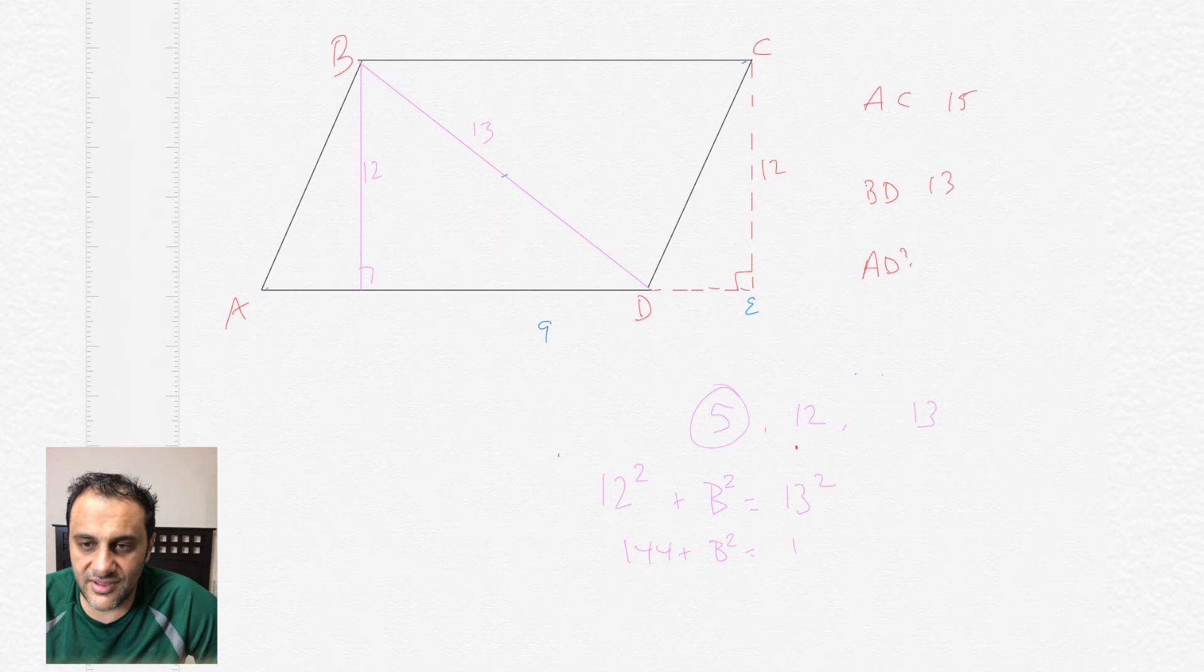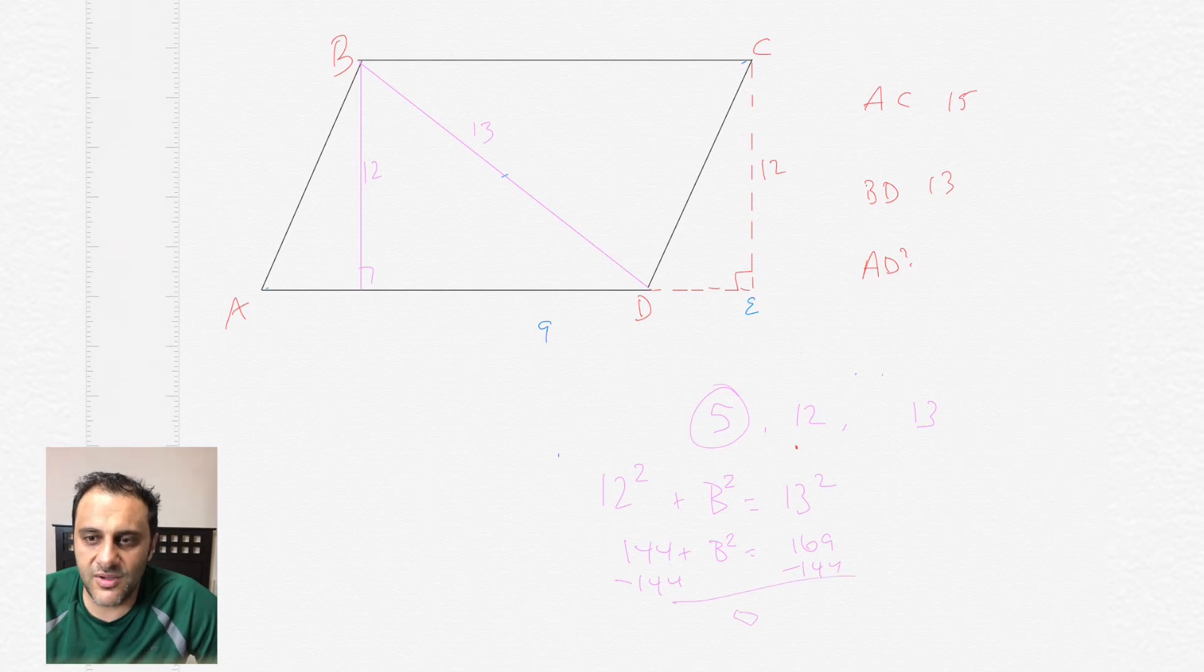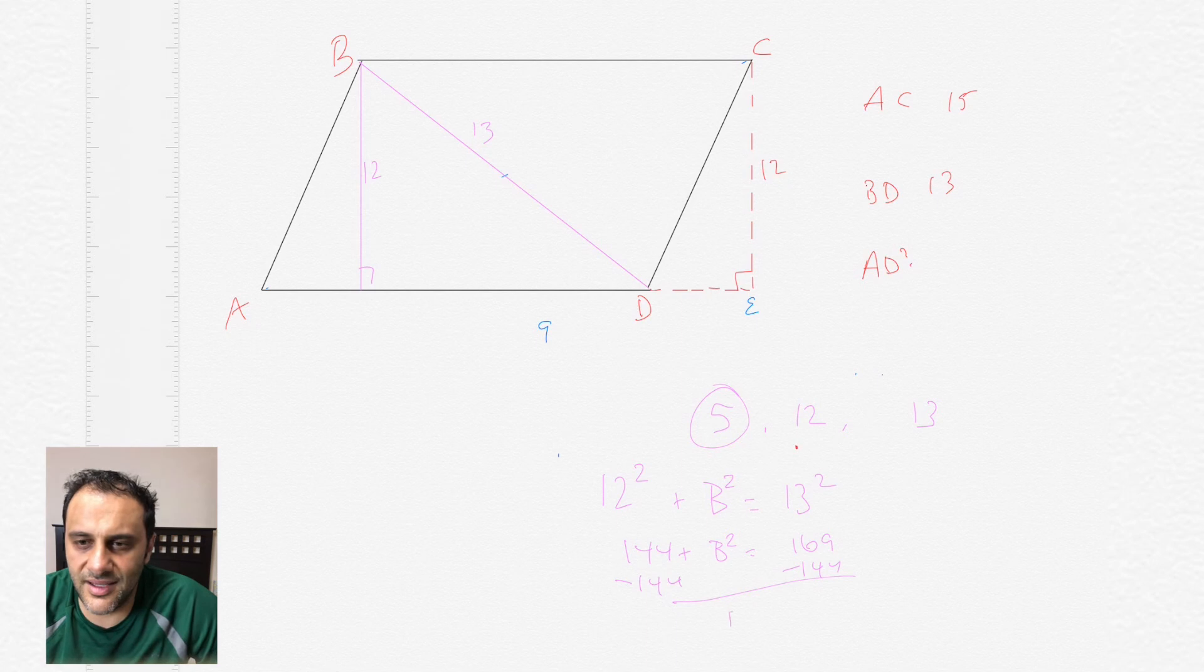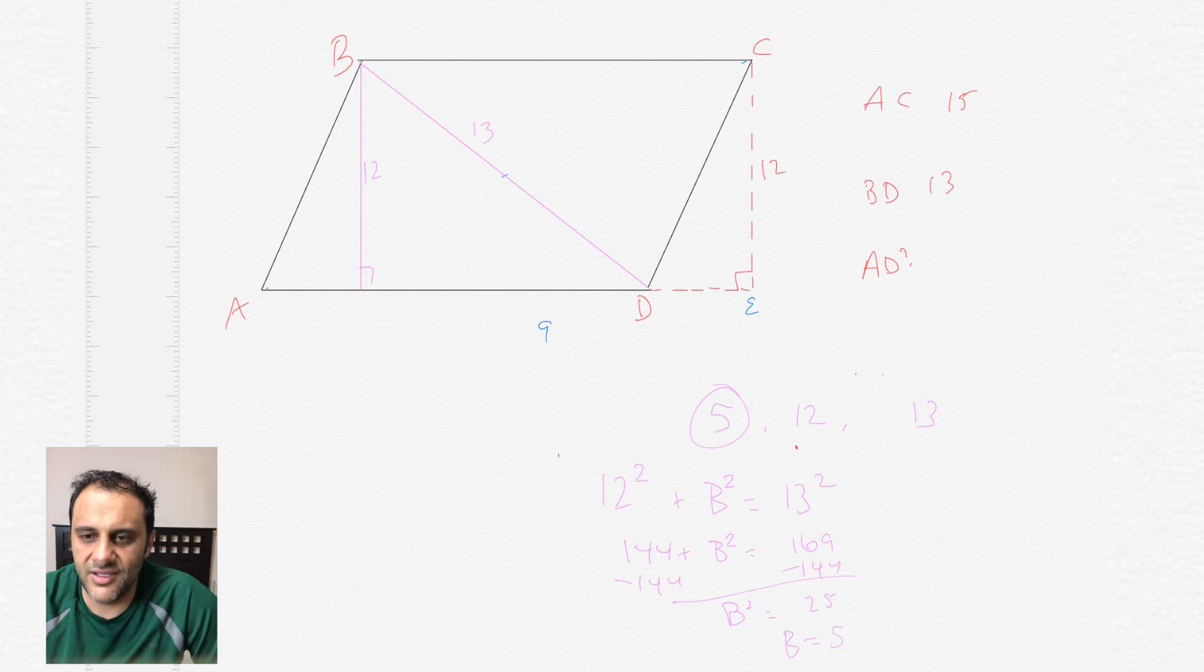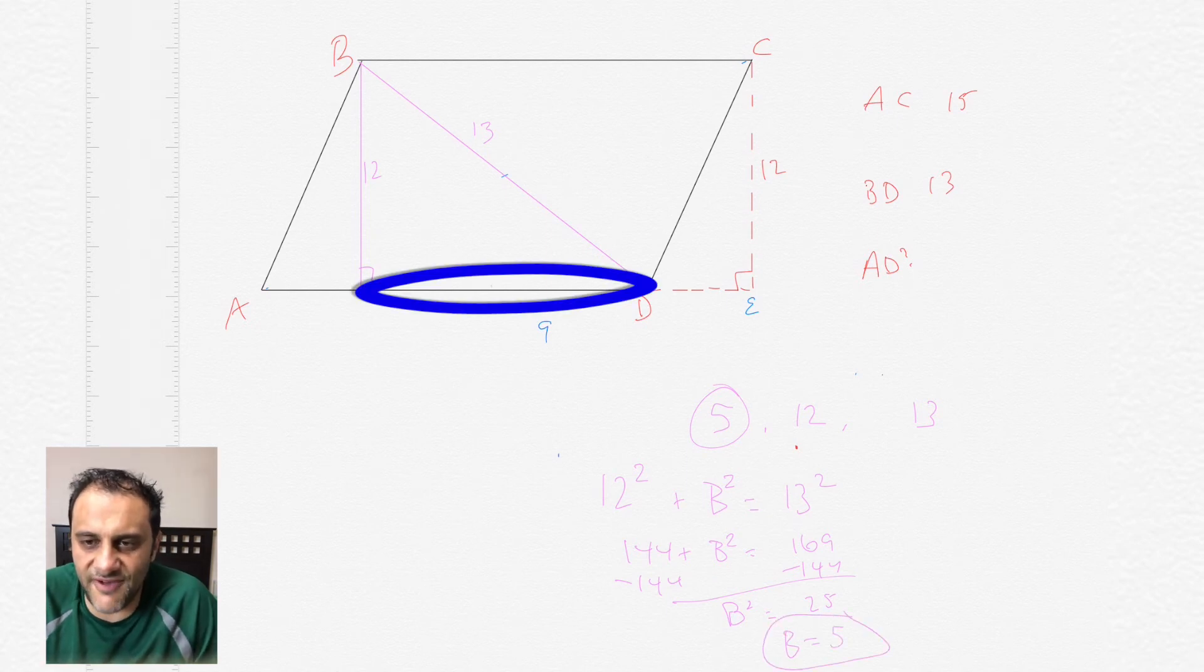But let's do it the Pythagorean Theorem way. 12 squared is 144, plus B squared equals 169. Let's go ahead and calculate that. So then subtract 144, we get B squared equals 25, and B equals 5. So that portion there is 5.